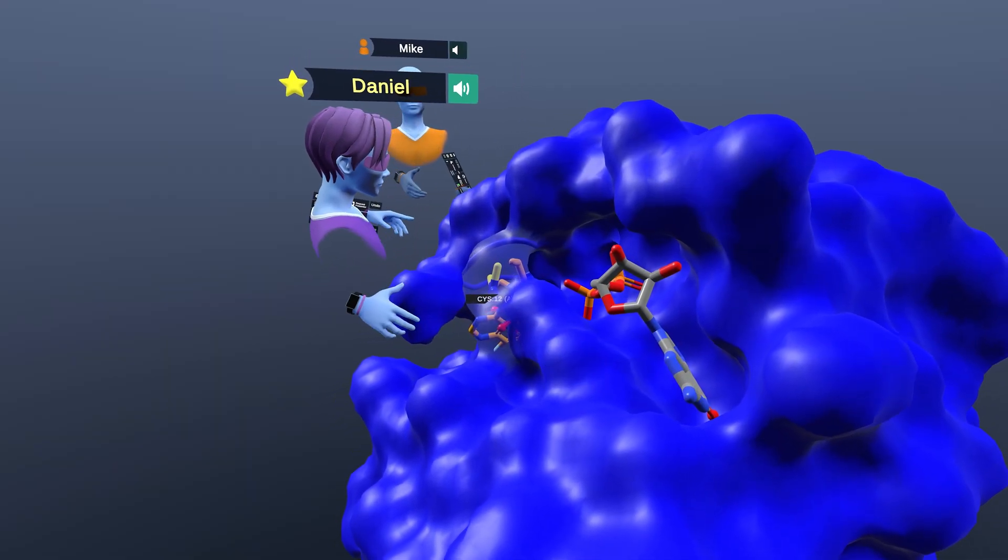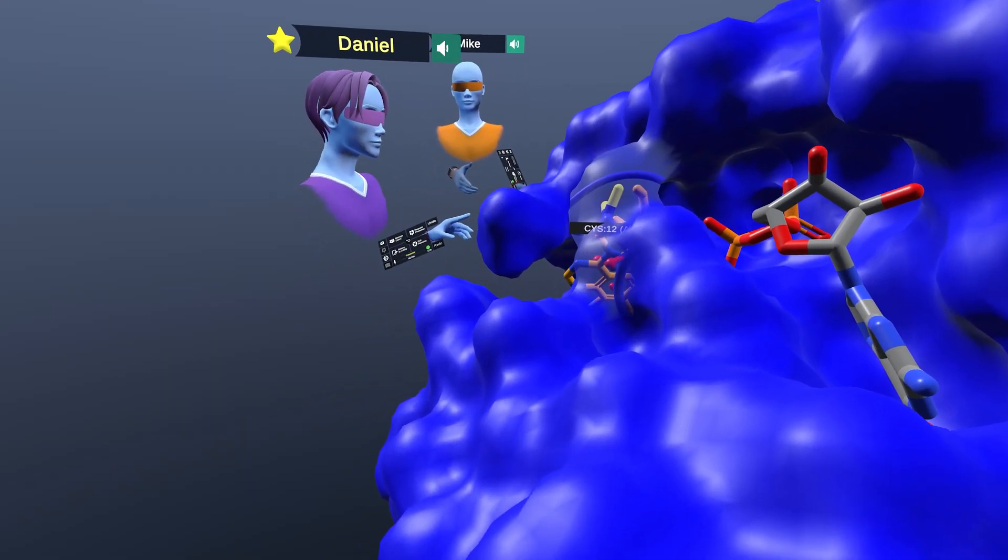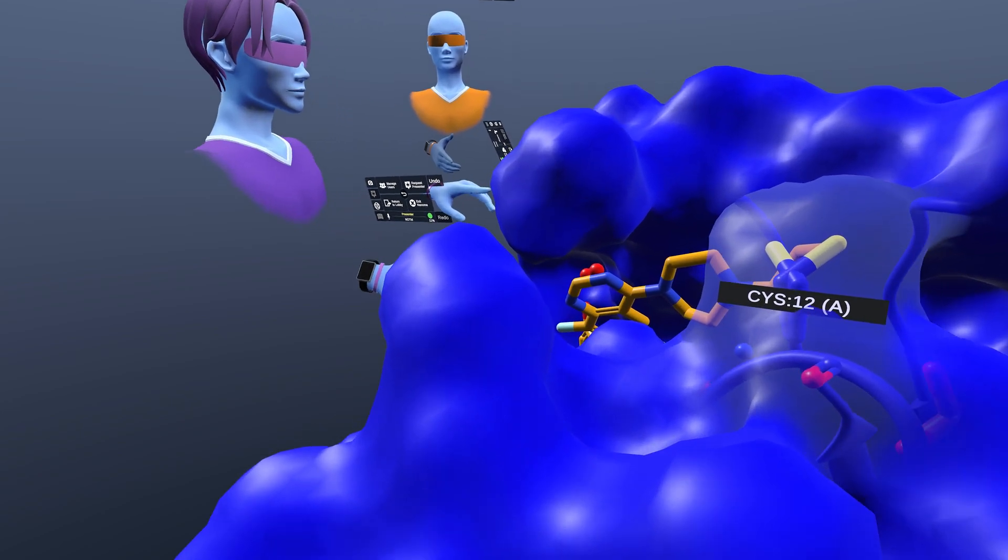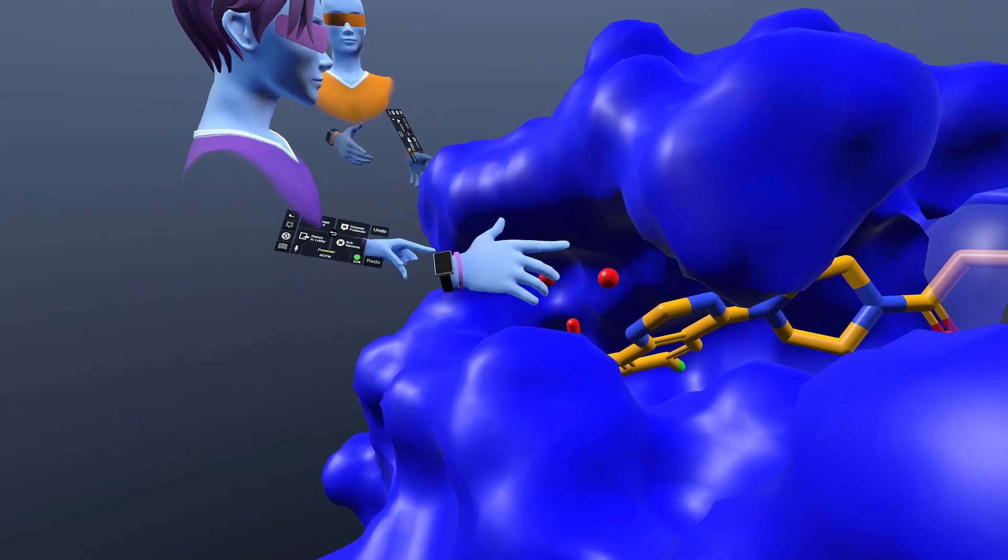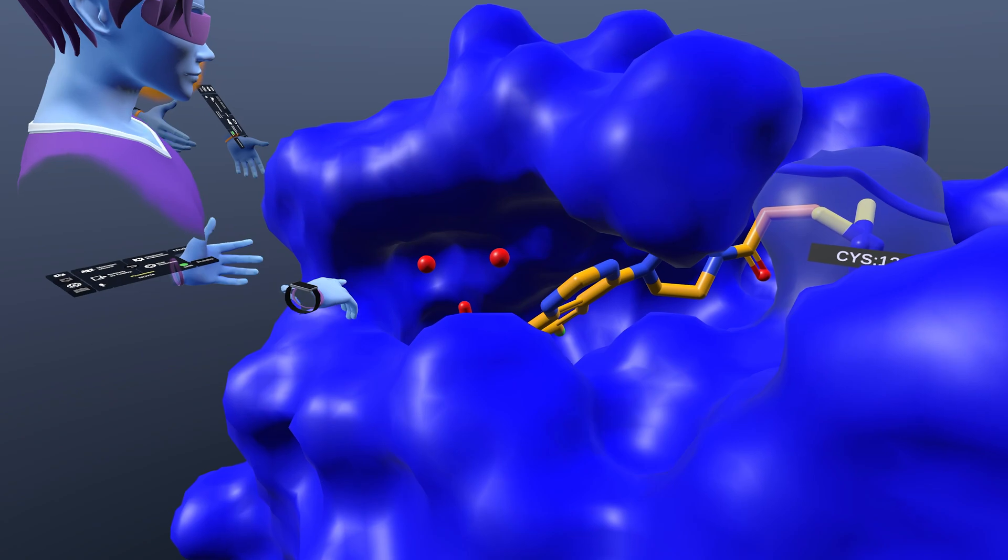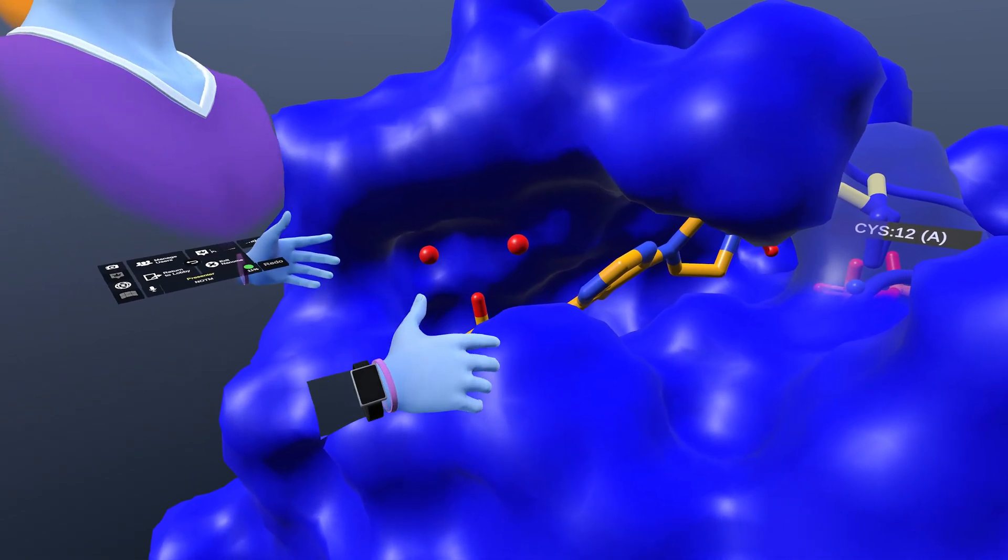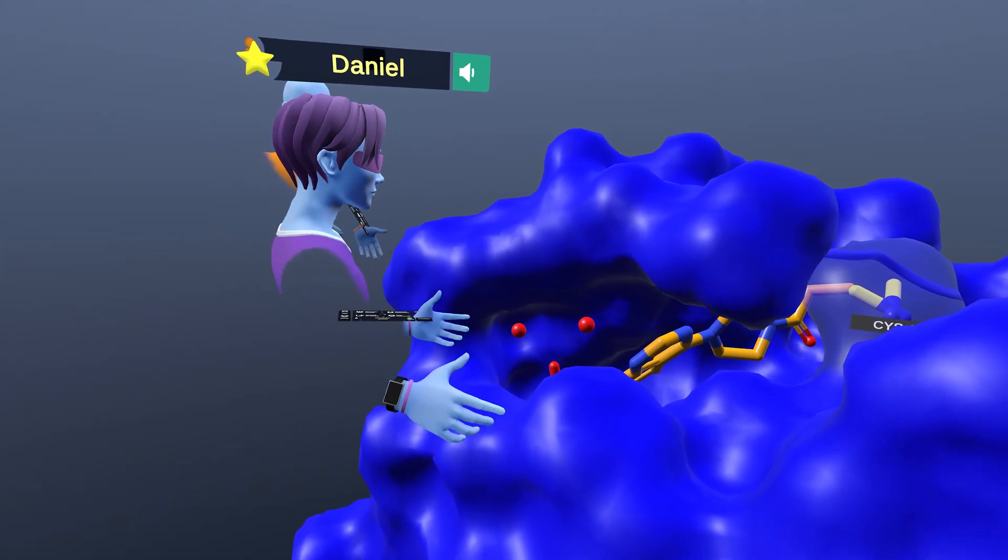Here we have the GTP bound and here we have the actual active pocket with the ligand bound here with the switch 2 and switch 1 loops that are characteristic of the KRAS protein.